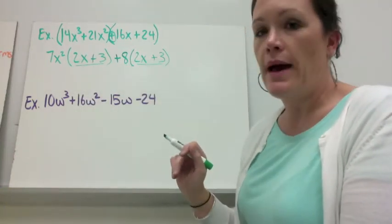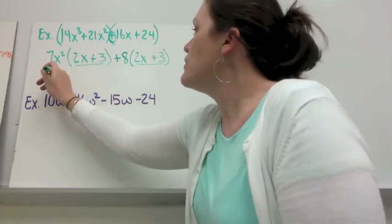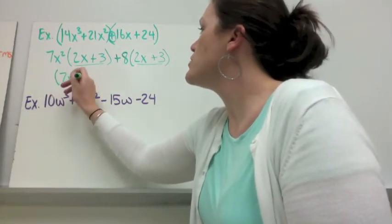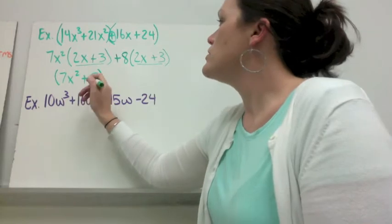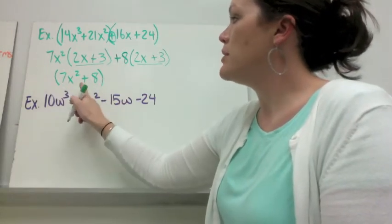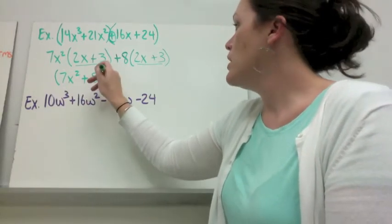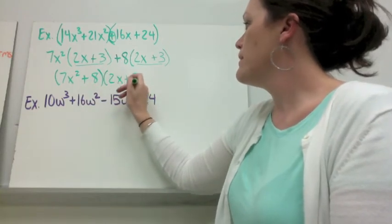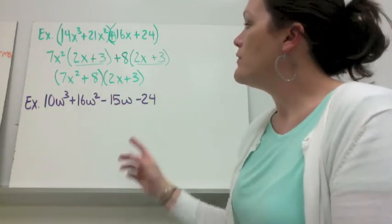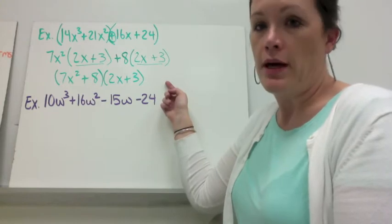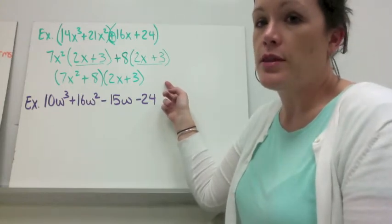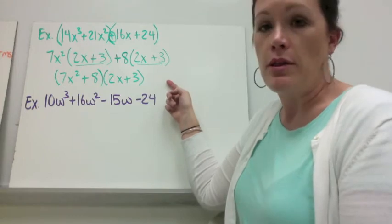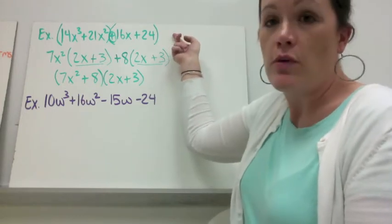Notice you have a common factor — the 2x plus 3s match. So to write your answer, you put together the greatest common factors that you took out. So 7x squared plus 8 becomes one of your factors, and 2x plus 3 is your other factor. If you wanted to check your answer, you could multiply that back together using the FOIL method, the BOX method, or the distributing method, and you should get back what you started with.